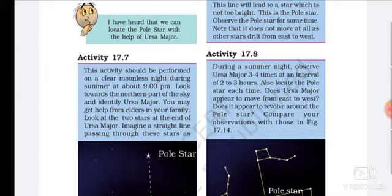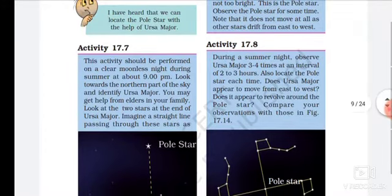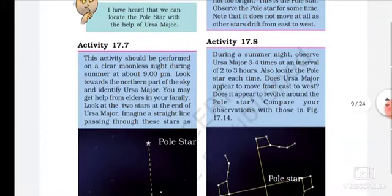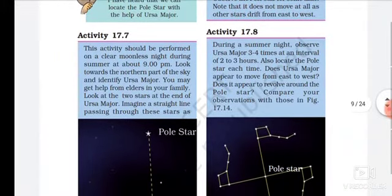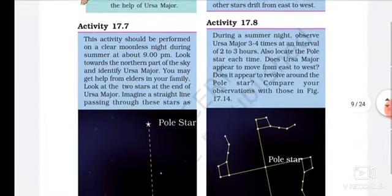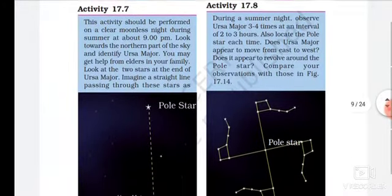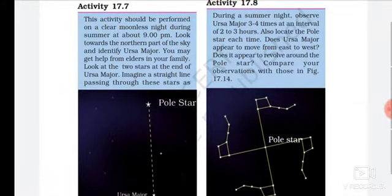Hello students, we continue our topic Activity 17.7. The activity should be performed on a clear moonless night during summer at about 9 p.m. Look towards the northern part of the sky and identify Ursa Major. You may get help from elders in your family. Look at the two stars at the end of Ursa Major.